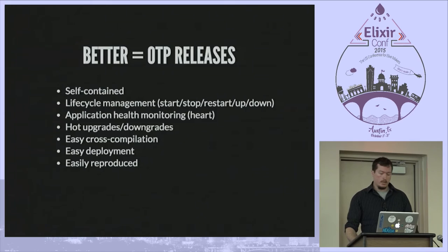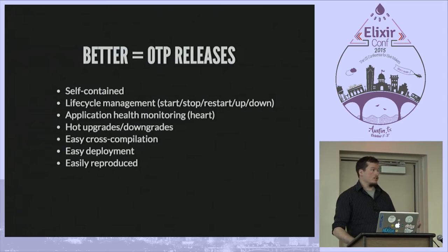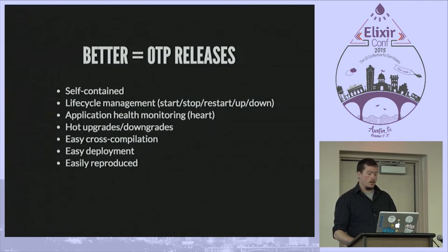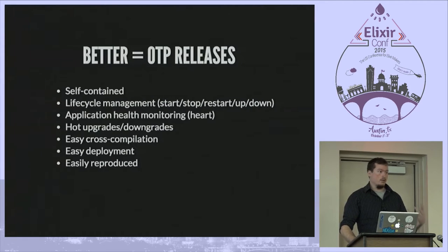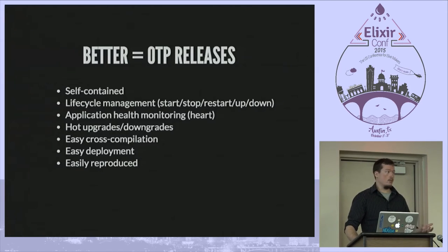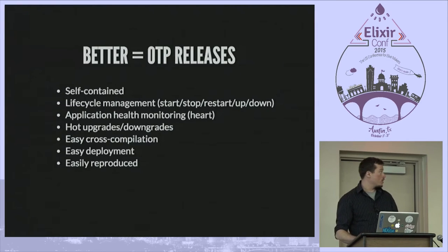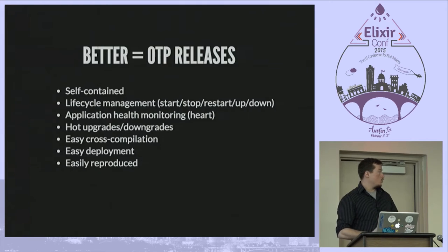There are hot upgrades and downgrades baked in. Easy cross-compilation — all you have to do is reference a compiled version of the Erlang runtime system for your target system; packages for most target systems are already available. Easy deployment — it comes as a tarball, you just extract on your target system and run it. Also easily reproduced: the artifact is a tarball with all explicit version dependencies, so once you've built this release, it never changes. It's immutable.